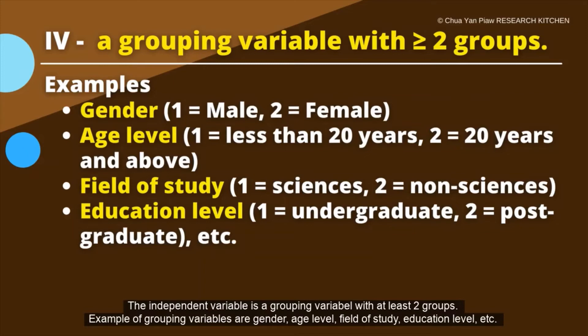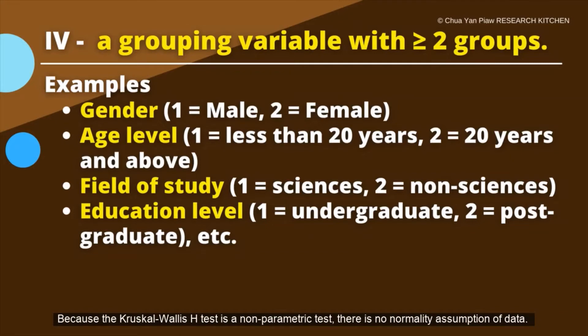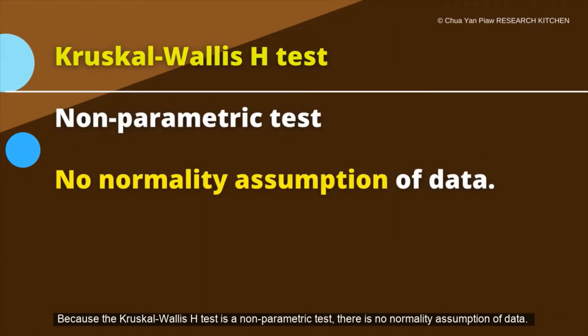The independent variable is the grouping variable with at least two groups. Examples of grouping variables are gender, age level, field of study, education levels, etc. Because the Kruskal-Wallis H test is a non-parametric test, there is no normality assumption of the data.